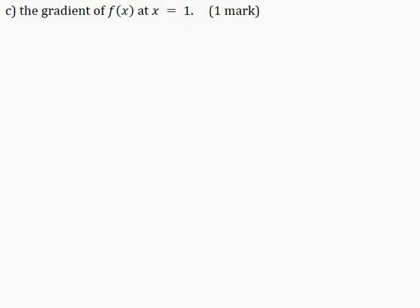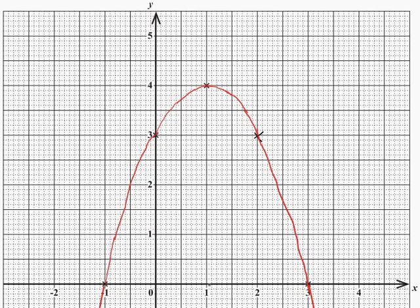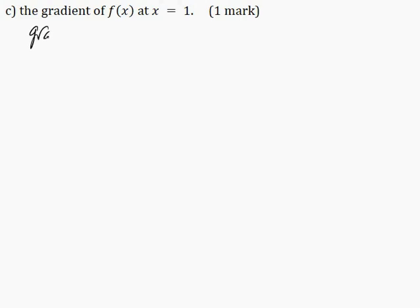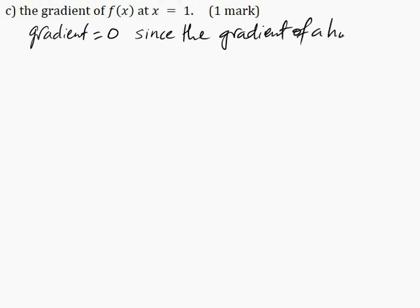Part C: determine the gradient of f(x) at x = 1 for one mark. At x = 1, f(x) = 4, which is the maximum point. To find the gradient, I will draw a tangent to the curve at the maximum point. The tangent at the maximum point is a horizontal line, and the gradient of a horizontal line is always 0. So the gradient is equal to 0.